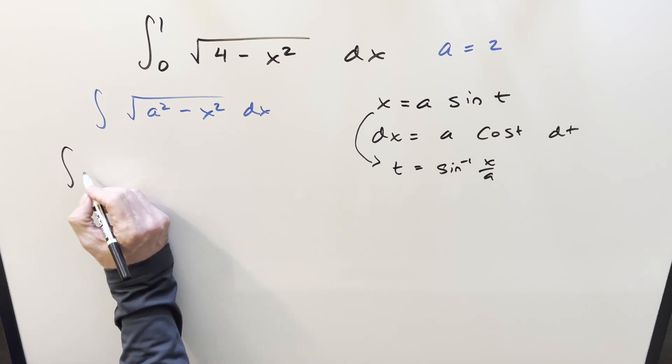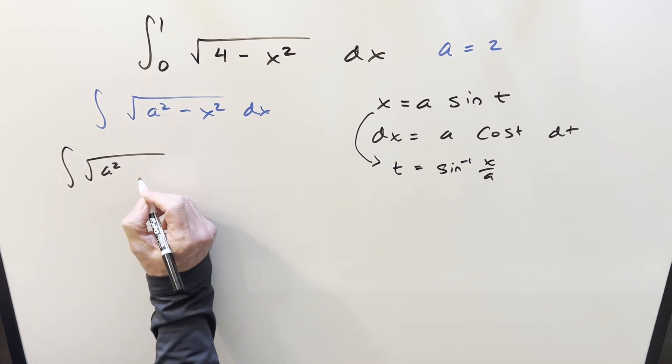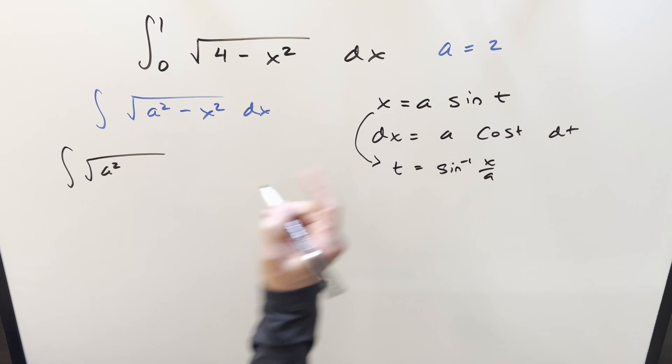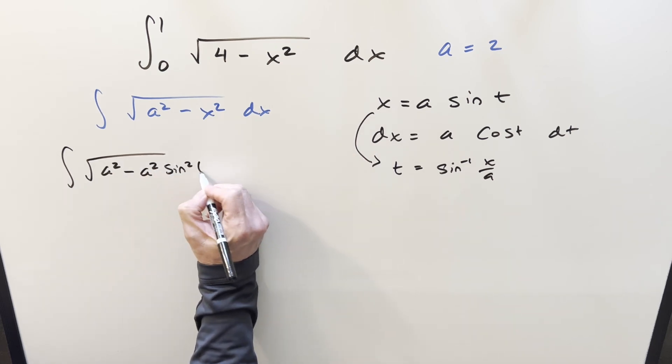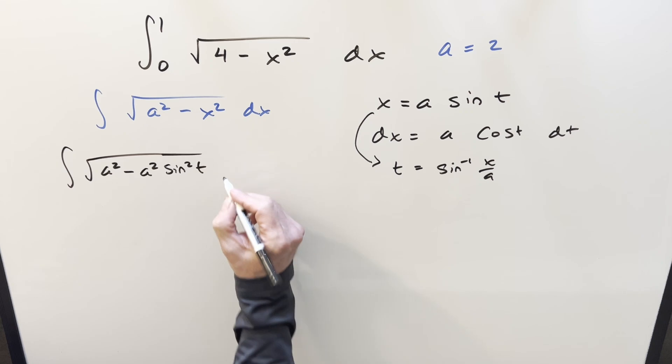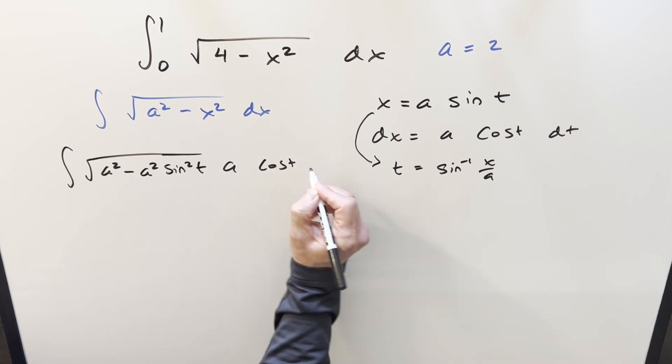Okay, go ahead and substitute. Let's see what happens. We have a squared. When we square this and plug in an a, it's going to be minus a squared sine squared t dx is all this stuff. We have an a cosine t dt.